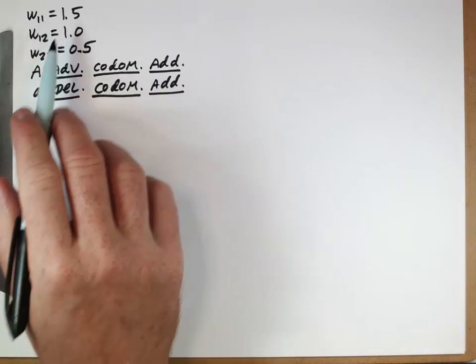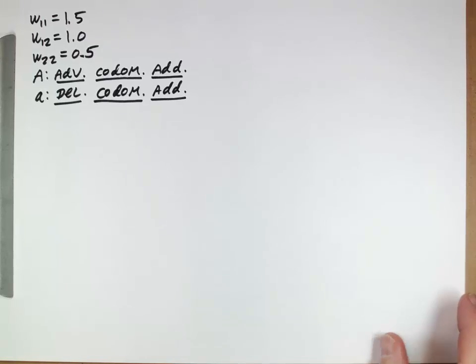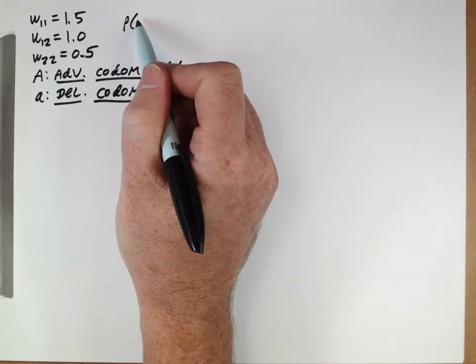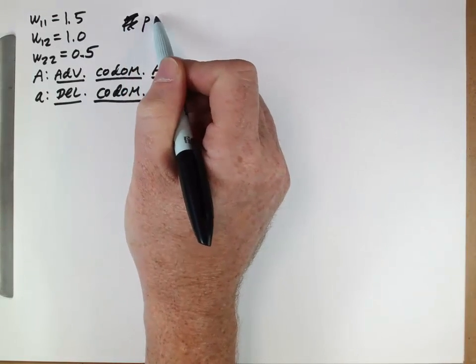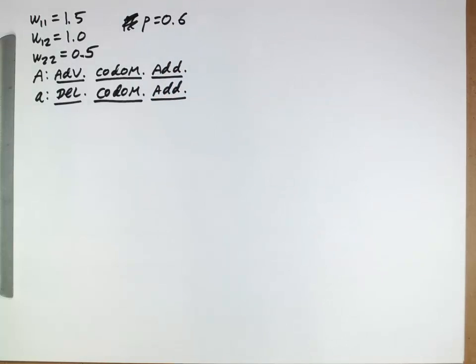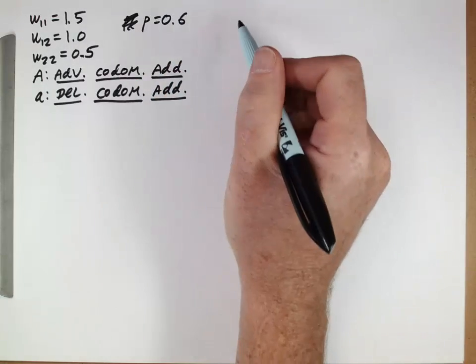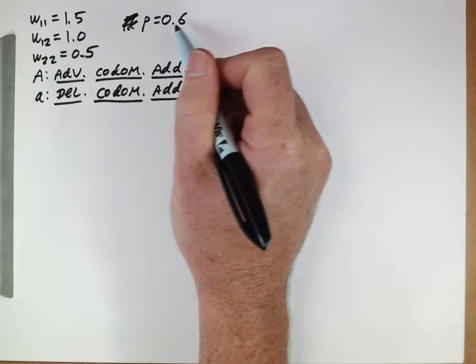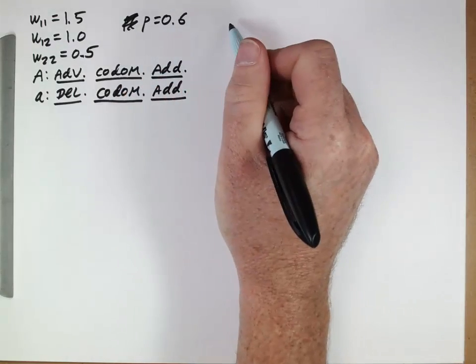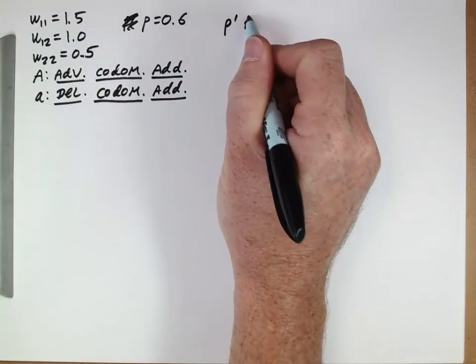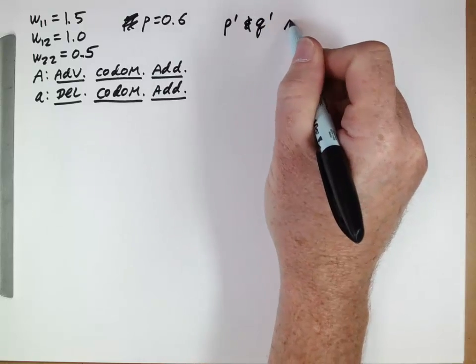So we have this scenario. The capital A allele is advantageous and codominant. Let's start the population off with some sort of frequency of the capital A allele. And then we want to know after one generation, if this is the starting frequency, what would these be after one generation?